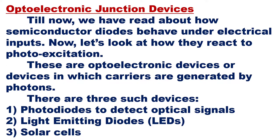Optoelectronic devices can convert electrical energy to light energy or light energy to electrical energy. These are devices in which carriers are generated by photons. We know that holes are majority charge carriers in p-type semiconductor and electrons are majority charge carriers in n-type semiconductor. Here we also use the word photon — the smallest particle of light. Light is made up of photons, so whenever light is incident, we say photons are incident.